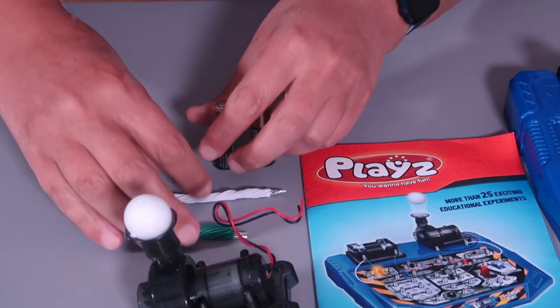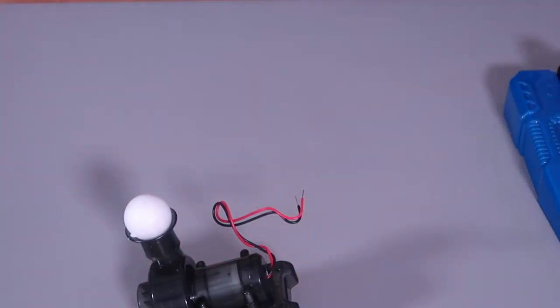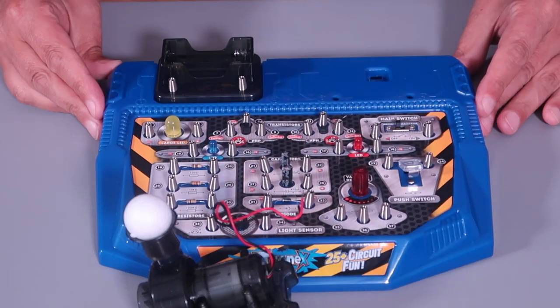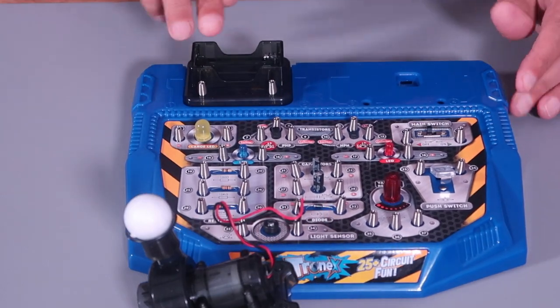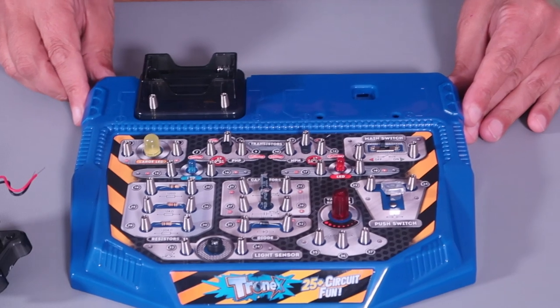So the initial setup is fairly straightforward with the circuit board. Now the batteries obviously go up the top here. We're going to show how to put the blower on.